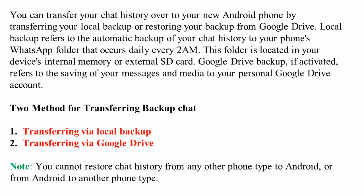You can transfer your chat history to a new Android phone by transferring your local backup or restoring your backup from Google Drive. Local backup refers to the automatic backup of your chat history to your phone's WhatsApp folder, which occurs daily at 2 a.m. This backup is located in your device's internal memory or your external SD card. Google Drive backup, if activated, refers to the saving of your messages and media to a personal Google Drive account. So there are two methods: transferring via local backup, or transferring via Google Drive.